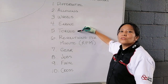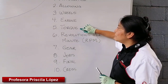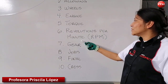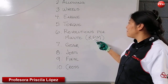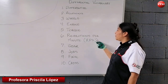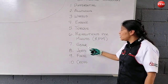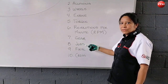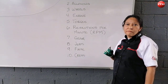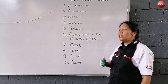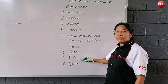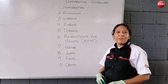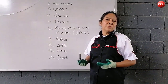Number five: torque. Remember, you don't pronounce the letter E at the end — torque. Number six: revolutions per minute, commonly written as RPM. Number seven: gear. Number eight: jobs — don't mispronounce it. Number nine: final. Number ten: cross. Thanks for your attention. We'll see you in the next video. Bye-bye.